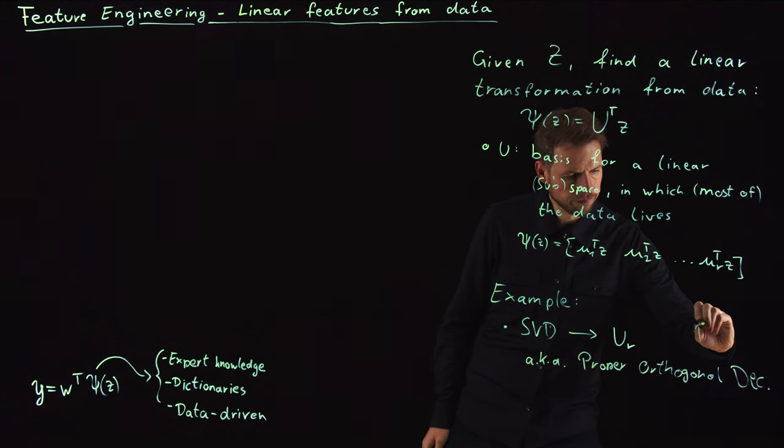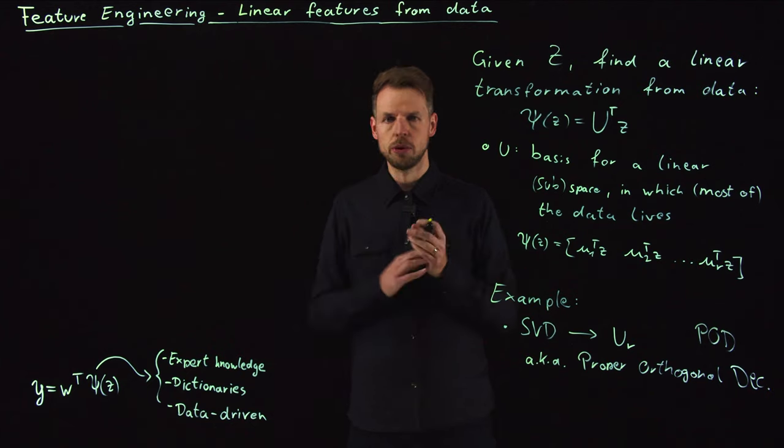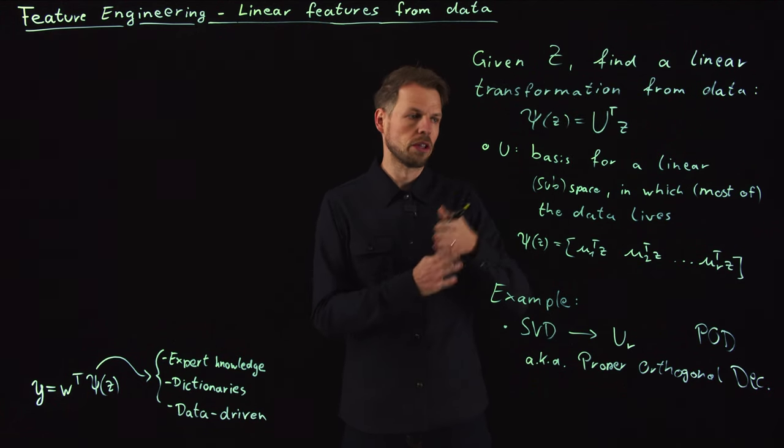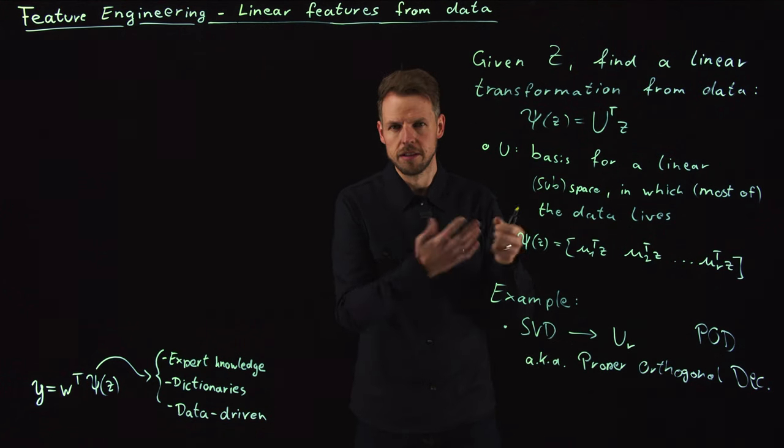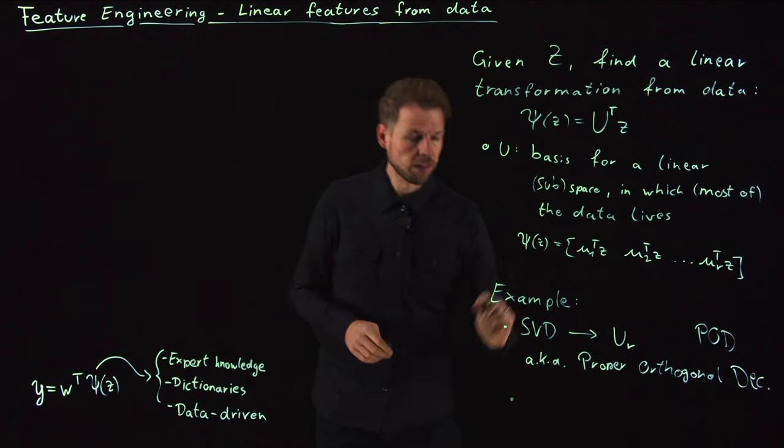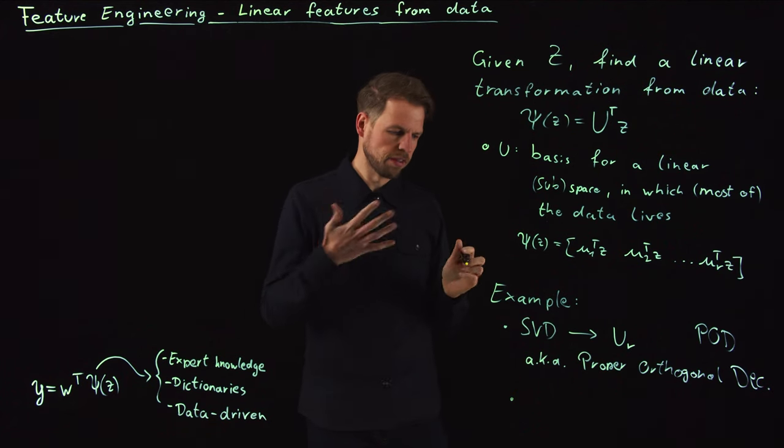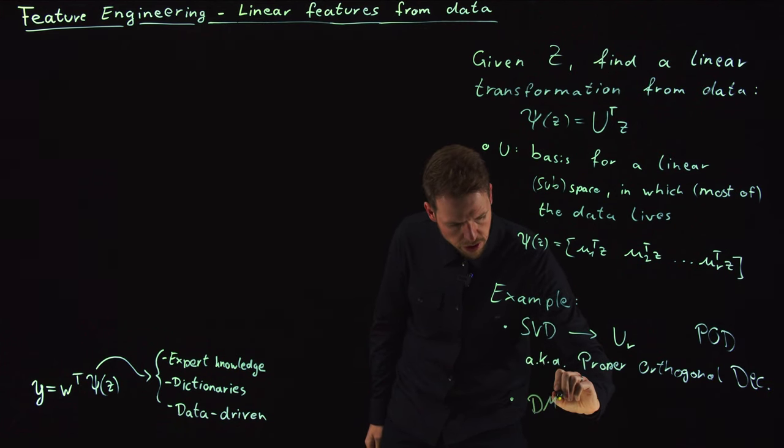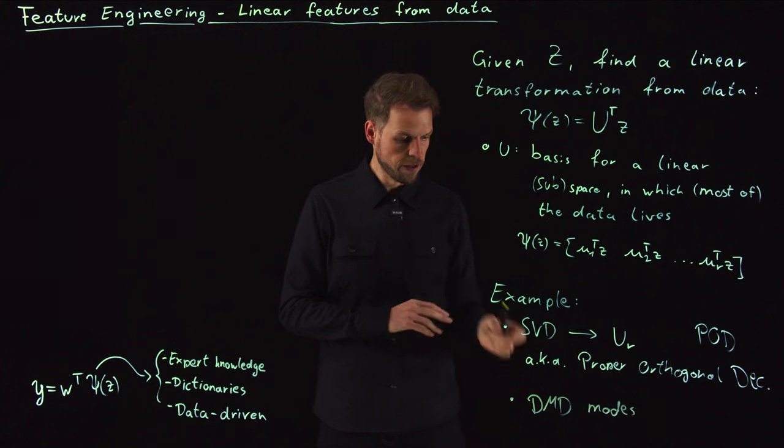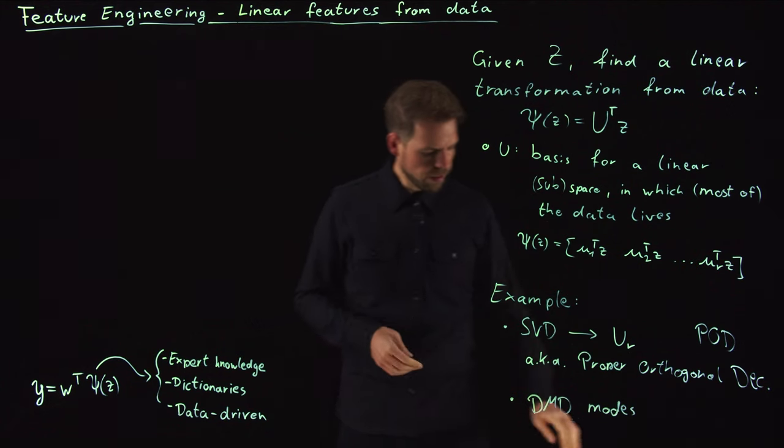One comment: this is also known as the proper orthogonal decomposition, or POD. If you ever heard the name POD, you get basically the message that you need to use the SVD to compute it. Because it's an orthogonal decomposition, the columns of U are pairwise orthogonal. You could also think of other bases that are not necessarily optimal or orthogonal. We have seen the dynamic mode decomposition, so you can use your DMD modes—basically the eigenvectors of your A matrix that you identify from data—and use projections onto these DMD modes as your features.